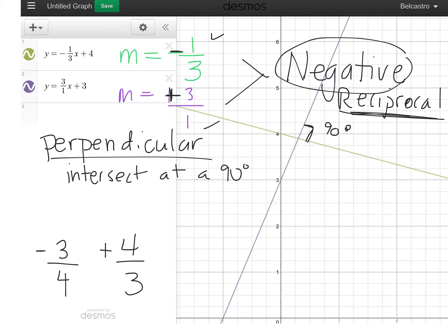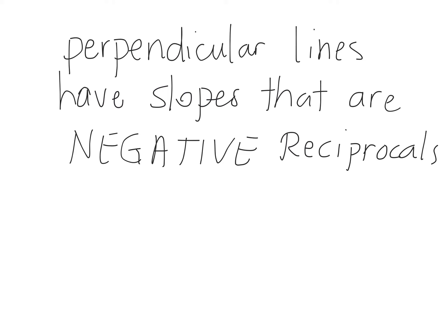Think about it. In order for them to intersect, one of them has to go one way, so positive, and the other one has to go the other way, negative. Perpendicular lines have slopes that are negative reciprocals.